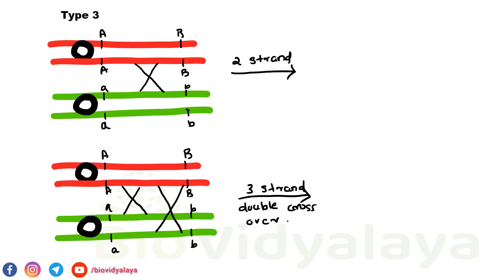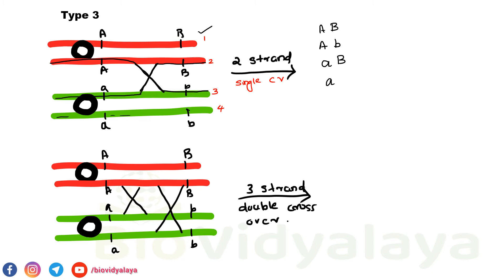The third type is when a single crossover occurs between two strands — specifically between strand 2 and strand 3. The first strand gives capital A capital B (parental), the second gives capital A small b (non-parental), the third gives small a capital B (non-parental), and the fourth gives small a small b (parental).